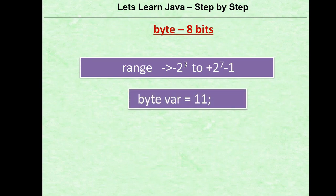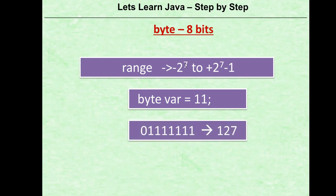To declare a byte variable, you write 'byte', give it a name such as 'var', and assign a value in the range minus 128 to plus 127. Now let's see why the exponent is 7 when there are 8 bits. This is because the extreme left bit — the sign bit — does not contribute to the value, so only 7 bits contribute. When a variable is signed, the range is minus 2 to the power of (n minus 1) because one bit is used for the sign.